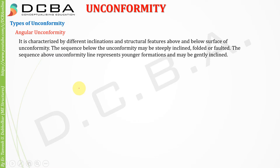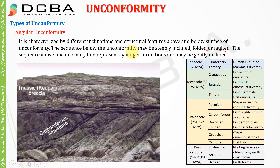The first type of unconformity is angular unconformity. It is characterized by different inclinations and structural features above and below the surface of unconformity. The sequence below may be steeply inclined, folded, or faulted, while the sequence above represents a younger formation and may be gently inclined. In the example shown, below the unconformity we have steeply inclined Carboniferous limestone, and on top is the Triassic breccia.